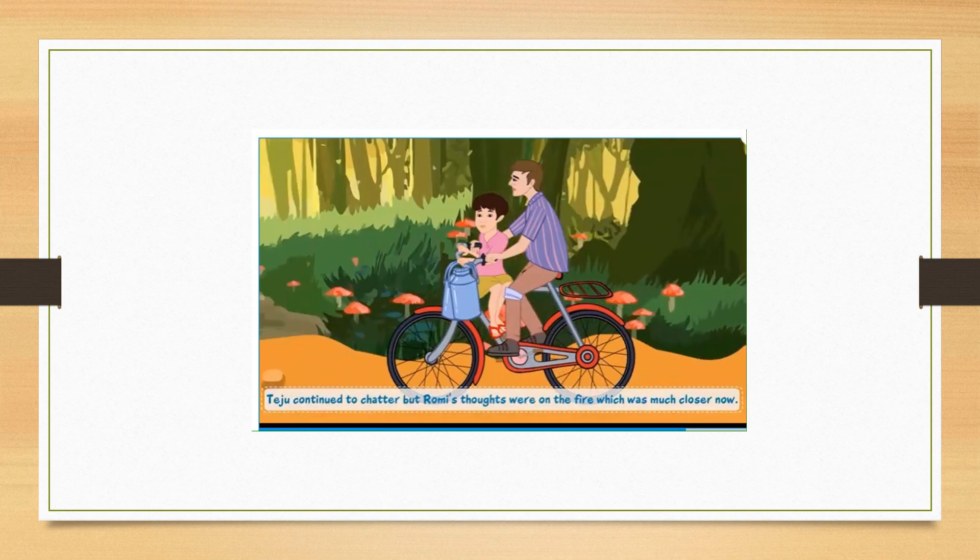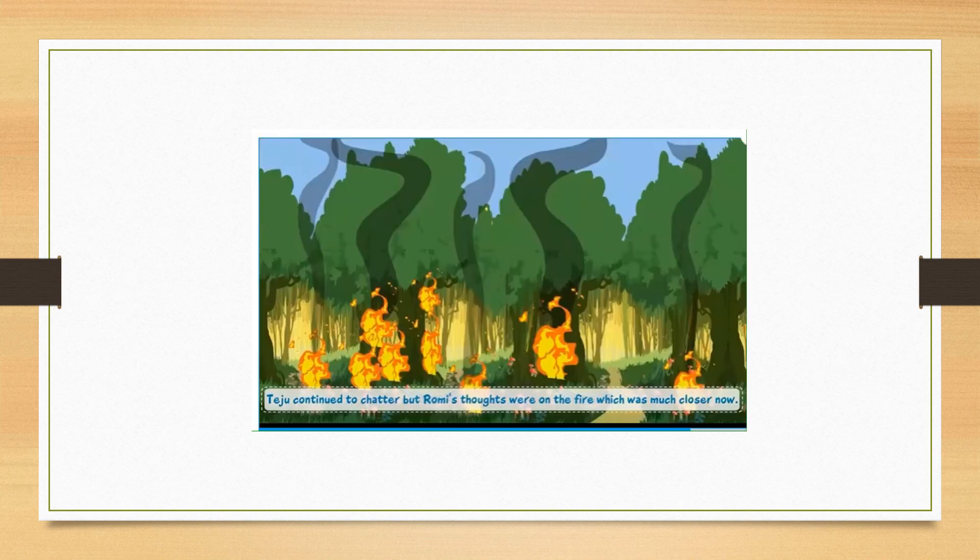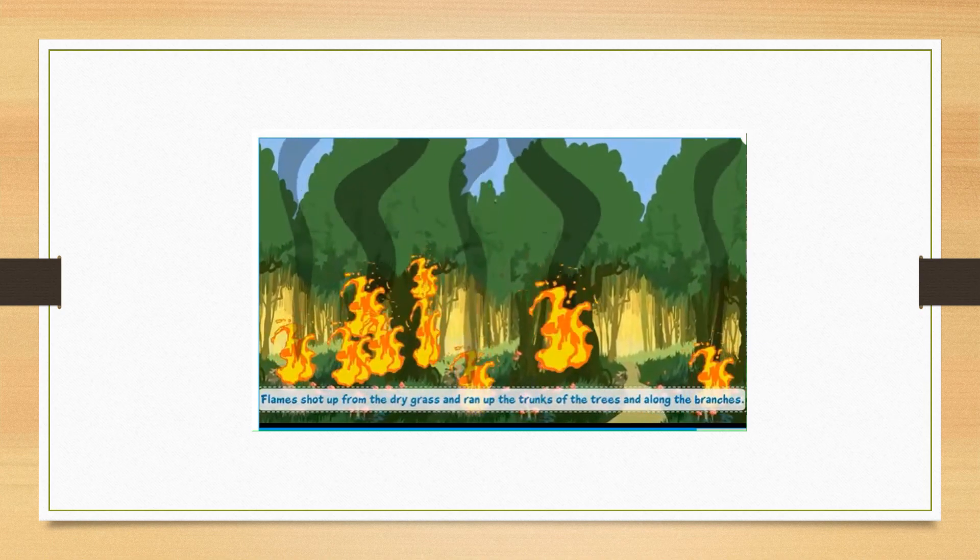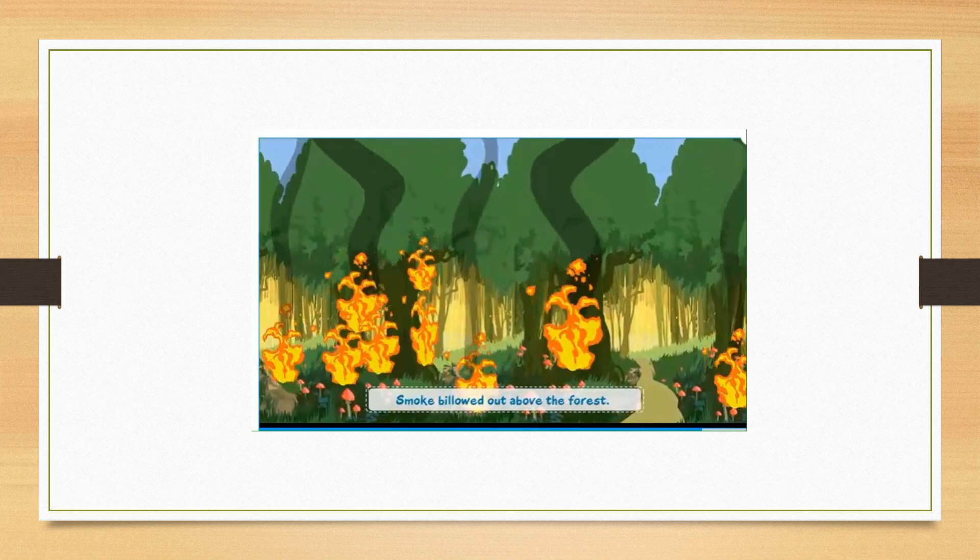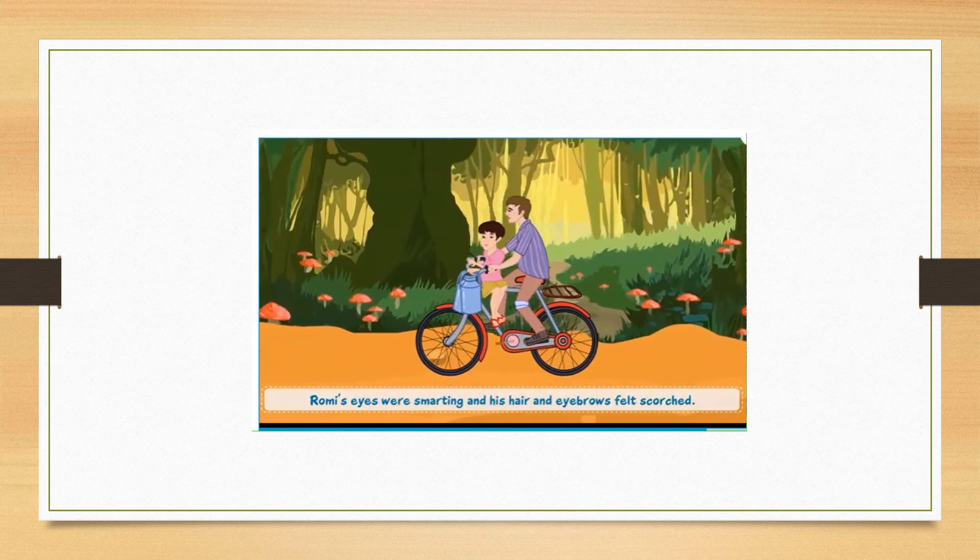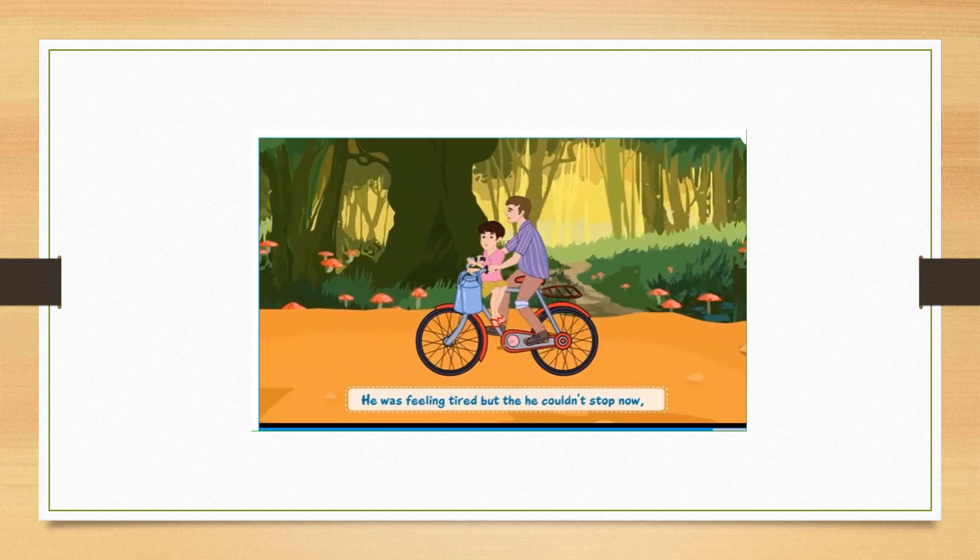Teju continued to chatter, but Romy's thoughts were on the fire, which was much closer now. Flames shot up from the dry grass and ran up the trunks of the trees and along the branches. Smoke billowed out above the forest. Romy's eyes were smarting and his hair and eyebrows felt scorched. He was feeling tired, but he couldn't stop now.